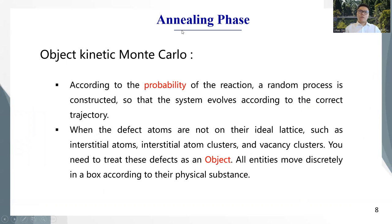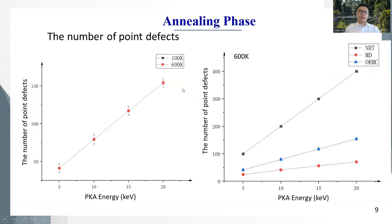Then, for the annealing phase of primary radiation damage, the object kinetic Monte Carlo method is used. Also, in this phase, the number of point defects are calculated and the results are compared with the MD simulation and NRT method.